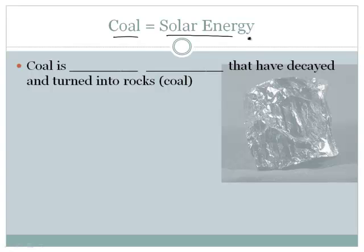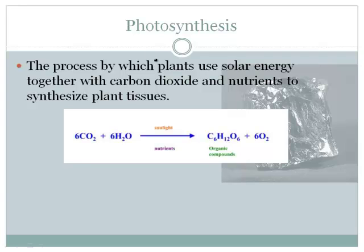So coal is actually solar energy. Because coal is dead things — things that have decayed and turned into rocks. Basically, coal was once a plant: a tree, a leaf, or some kind of living organism. Most likely it was a plant; it's very unlikely that animals were involved. So coal is essentially a plant that has decayed.